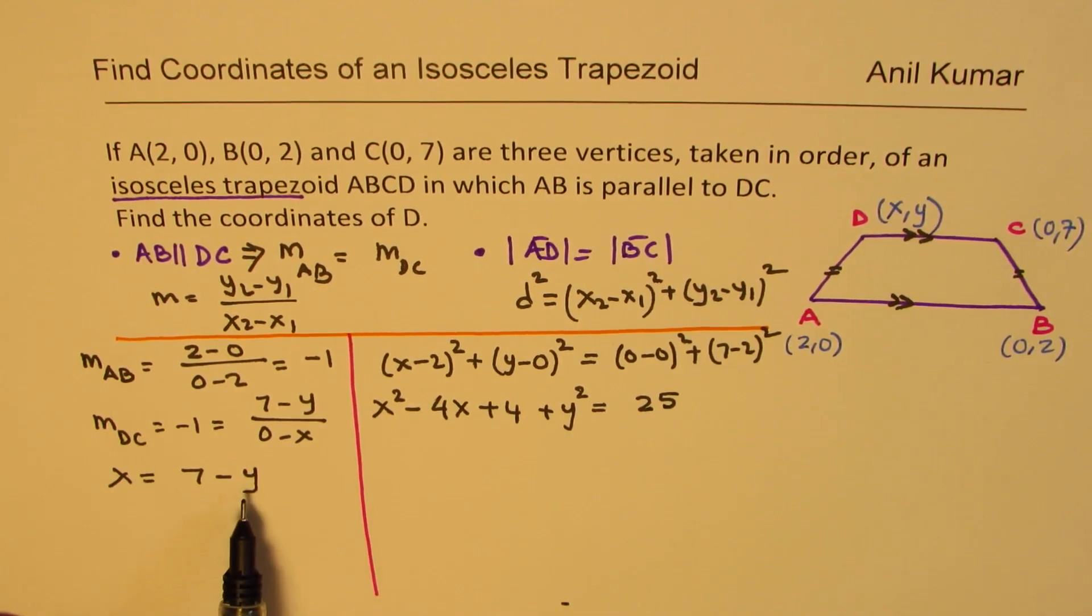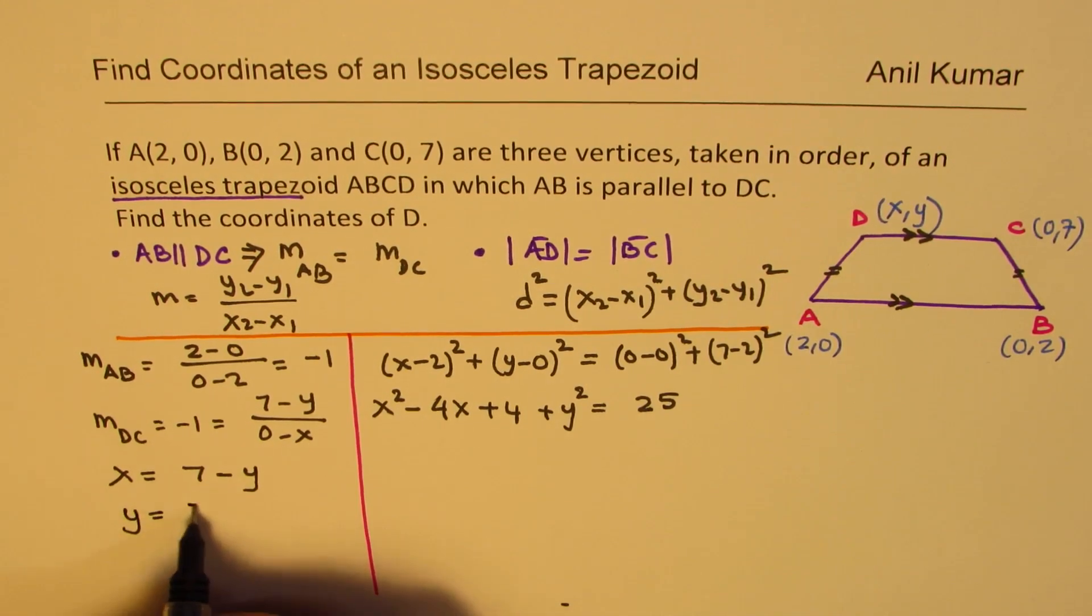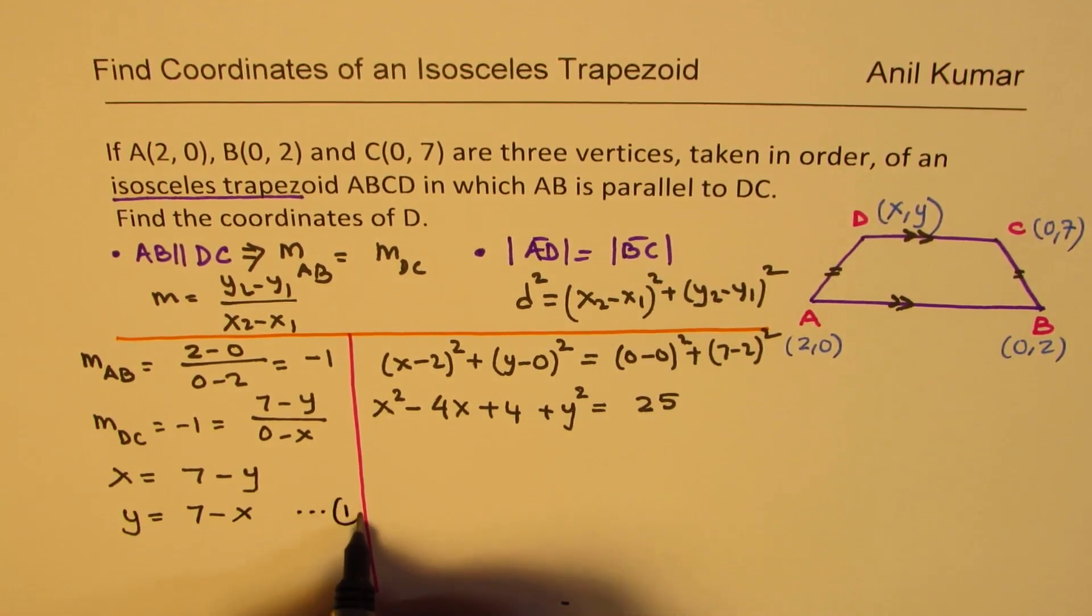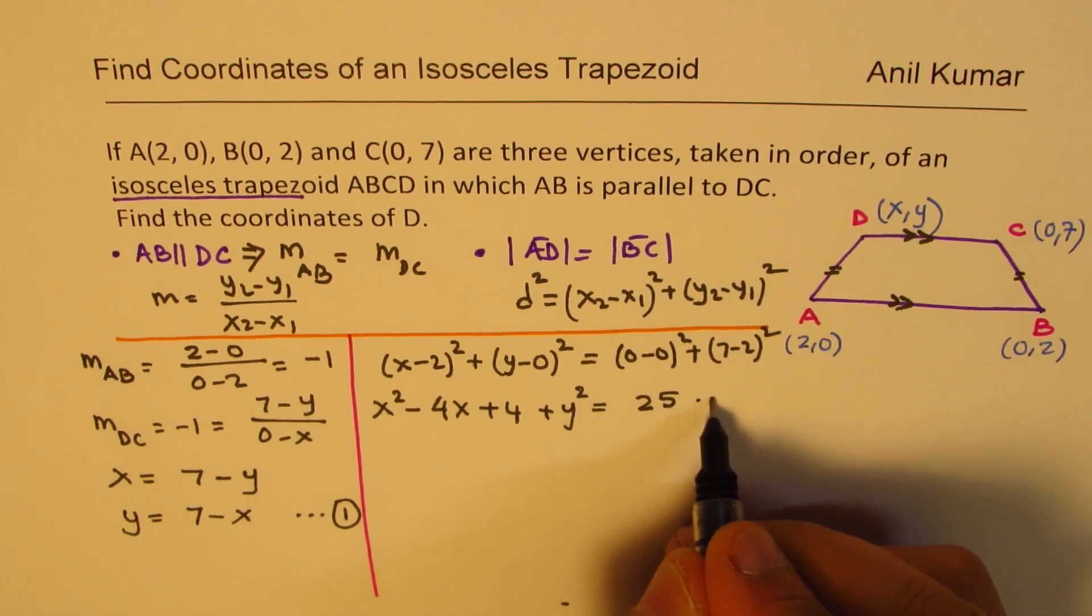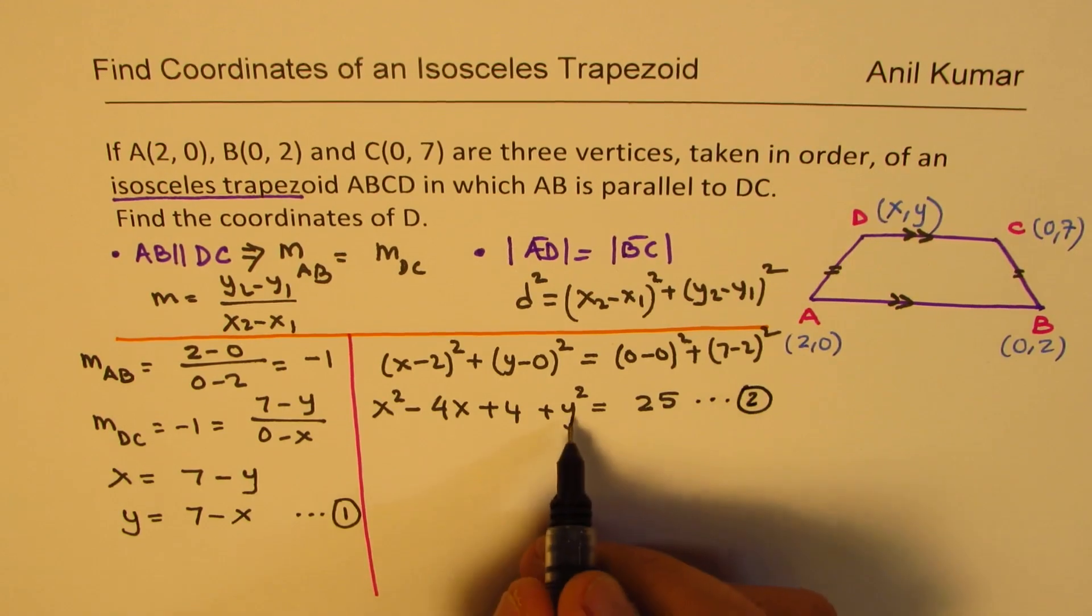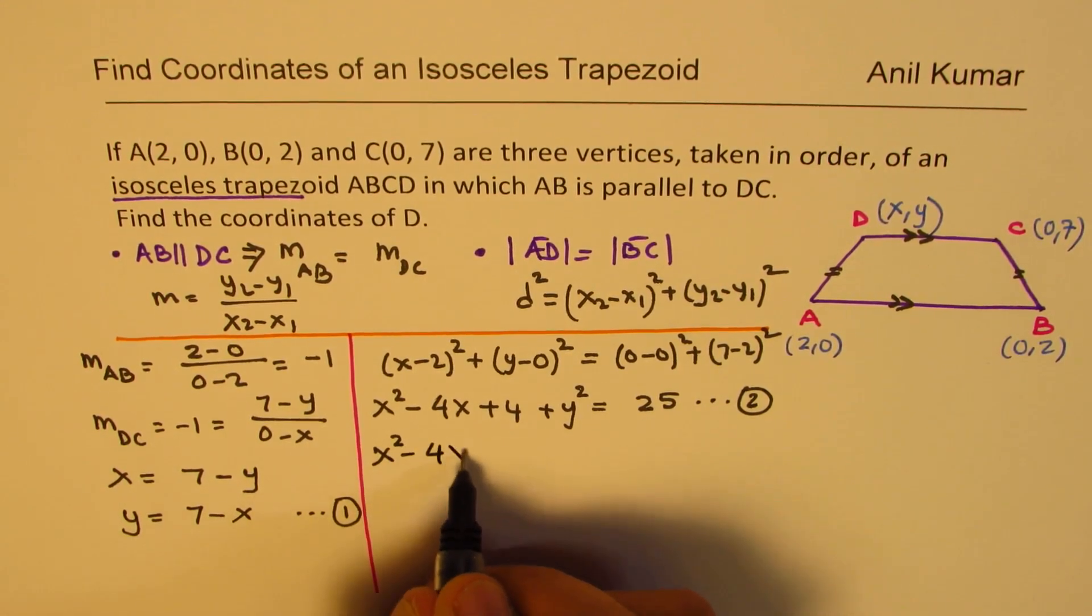Now we have two terms in X, one in Y. So it's good idea to write equation in terms of Y. So I'll write this as Y equals to 7 minus X. And I'll call this as my equation number one. So we'll substitute this in this equation number two, that value of Y. So we get X² minus 4X plus 4.